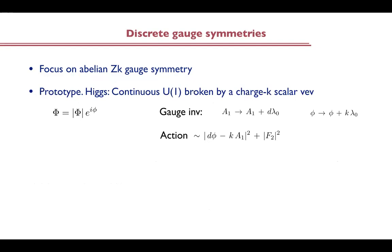To discuss discrete gauge symmetries, the prototype description is starting with a Higgs model. We consider a theory with a continuous U(1) which is broken by some scalar with charge K. We parameterize the scalar and focus on the physics of the phase. There is a gauge invariance for the U(1) and a shift of the phase by a factor of K with respect to the parameter of the U(1) gauge transformation. The typical action, once you integrate out the modulus of this scalar field, has a kinetic term for the gauge field and a coupling where the photon is eating up the scalar with a factor of K, consistent with the gauge transformation.